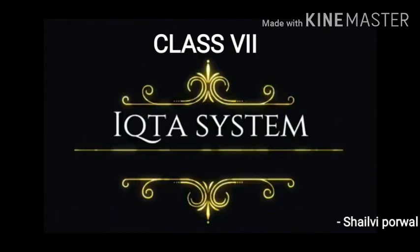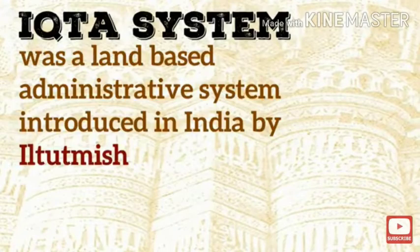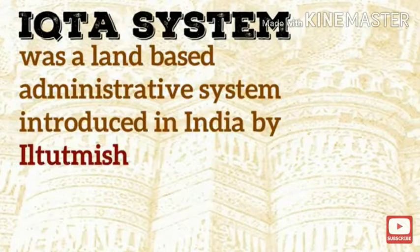Hello students, today we are going to study the Iqta system during the period of Delhi Sultanate. Let's get started. The Iqta system was a land-based administrative system introduced in India by Iltutmish of the Slave Dynasty, and then this system was followed by the other rulers of Delhi.